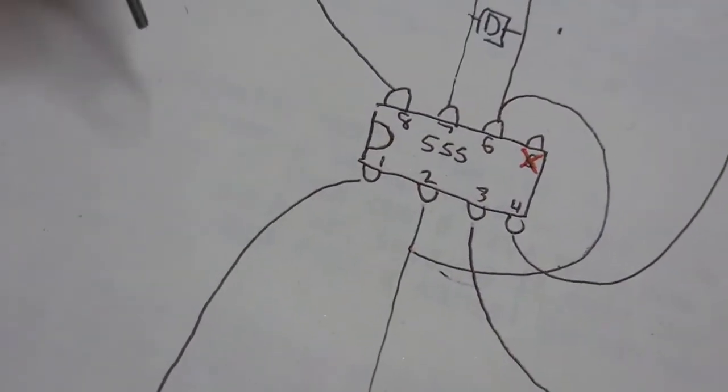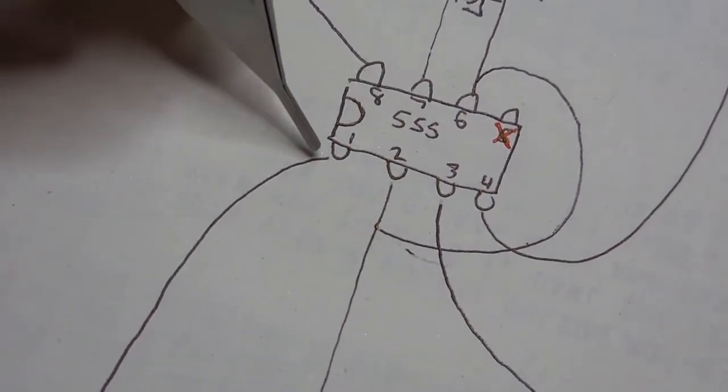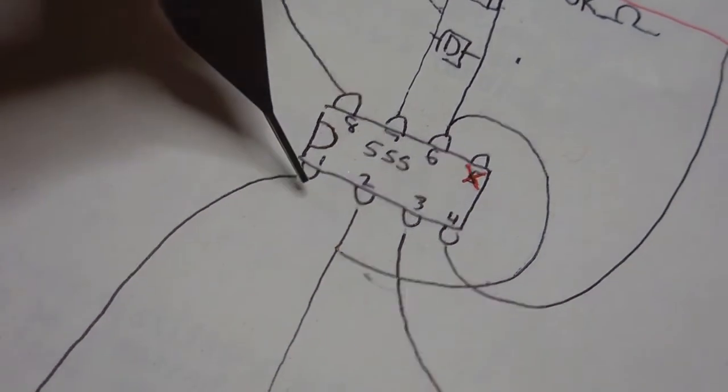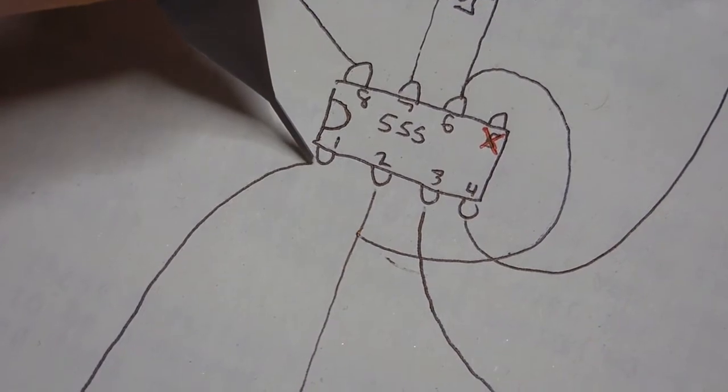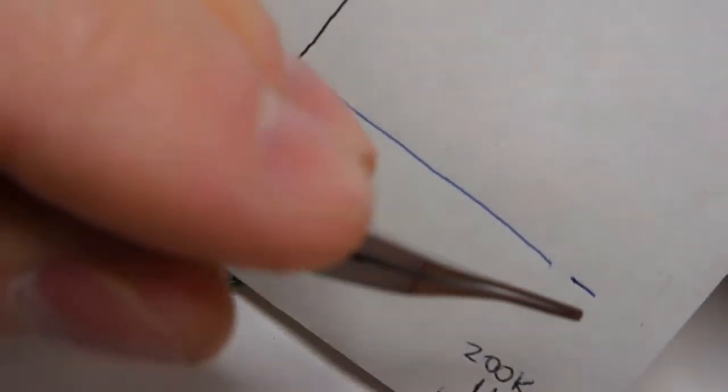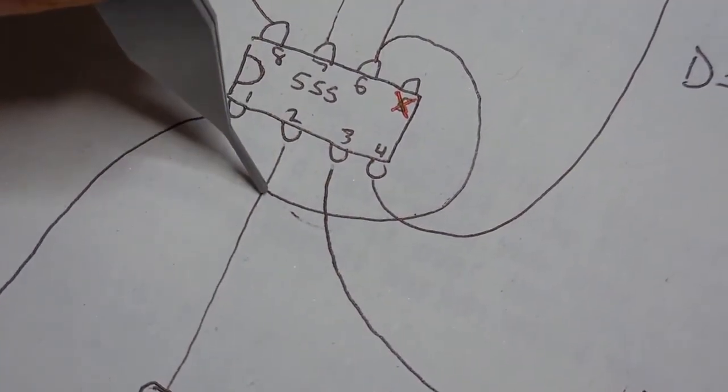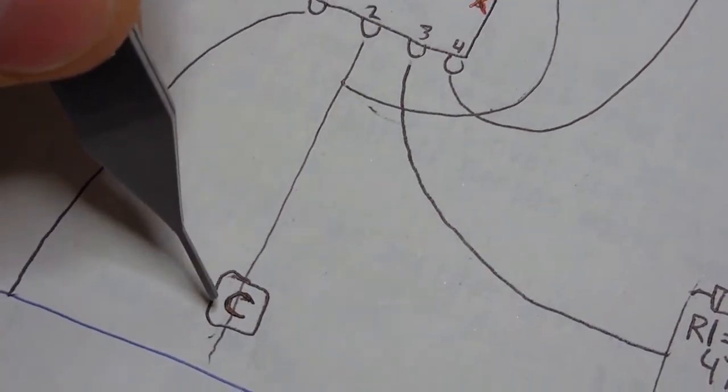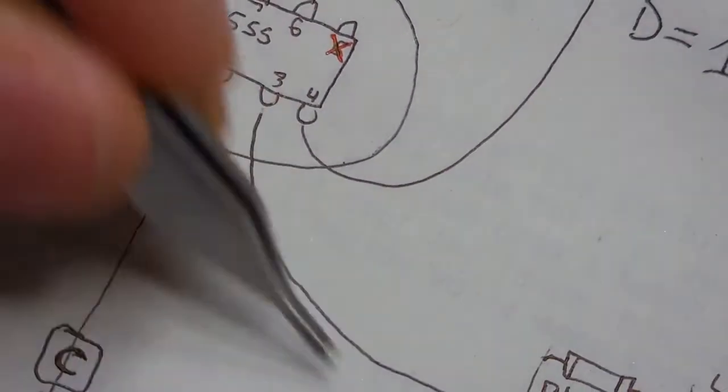As per the diagram that I had done, number one, the leg number one, goes to the negative. So this is the negative. Number two connects to six and also to this capacitor, and then goes to the negative. Number three goes to the LED.